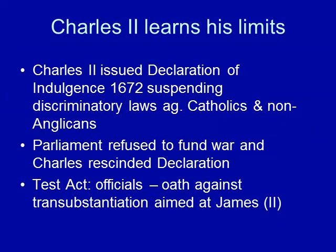Charles II will learn his limits. He issues the Declaration of Indulgence in 1672, which tries to suspend discriminatory laws against Catholics and non-Anglicans. Parliament refuses to fund his war, so he has to give up on the Declaration of Indulgence. The Test Act is then passed by Parliament, requiring officials to swear an oath against transubstantiation — aimed specifically at James, Charles's brother, who would probably become the next king.